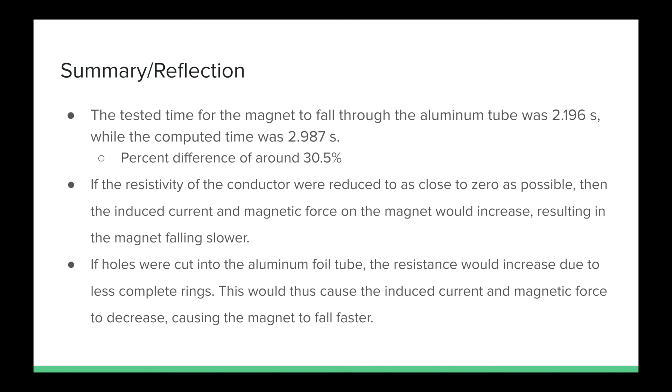Additionally, if holes were cut into the aluminum foil tube, the resistance would increase due to less complete rings. This would cause the induced current and magnetic force to decrease, causing the magnet to fall faster. Thank you for watching.